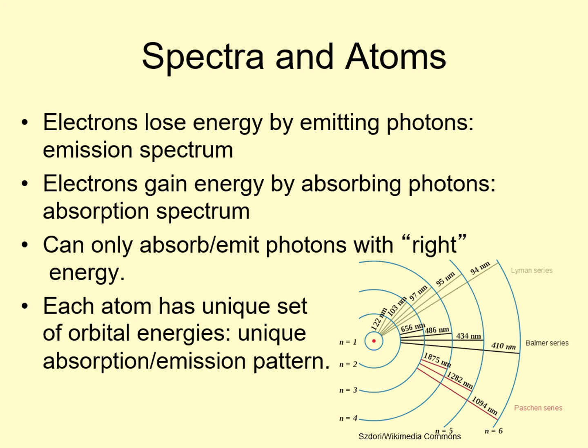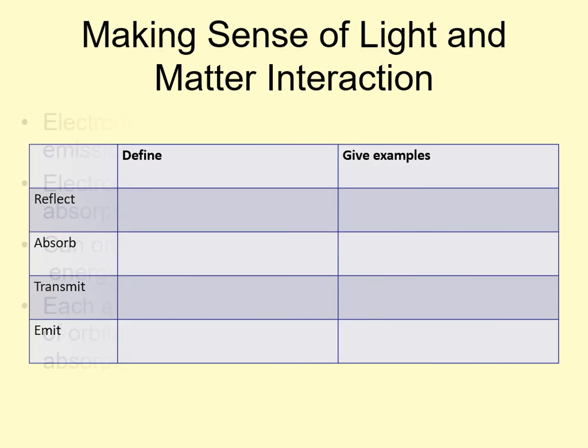Also notice that electrons don't just jump to the next level. They can jump one, two, three, or more levels at once, producing photons with more energy, hence shorter wavelengths, the farther they jump. Here's a table to fill in to remind yourself of the four major ways that light and matter interact. See if you can define each one without just relying on the name of the interaction — don't just say that reflection is when something reflects. Also come up with some examples, but leave room so that you can add others as you learn about them later in the course.